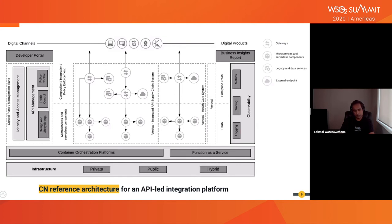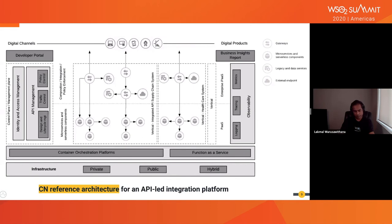API gateways work in sync with the control and management planes — API management components like design and lifecycle management, traffic control, policy control, and identity and access management components. It is also important that these APIs are listed in an externally accessible developer portal where application developers or API users can easily discover and use them with a well-defined business plan. Comprehensive observability and business insight reporting systems play a major role here.